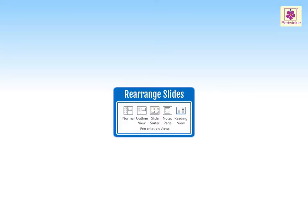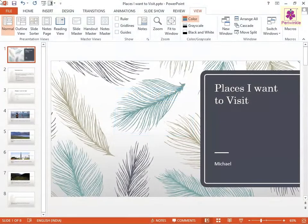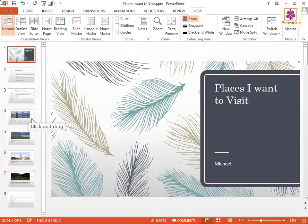We can rearrange slides in MS PowerPoint in a way we want. Go to the Normal view, identify the slides that you want to move. Then from the left pane, click and drag the required slide to rearrange it to another location.